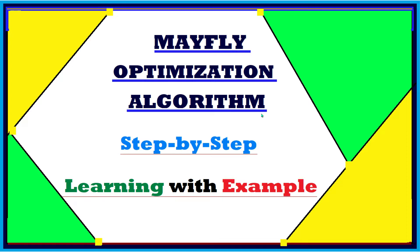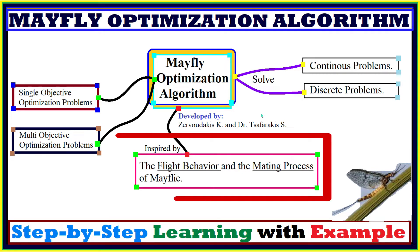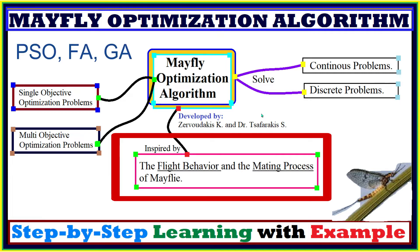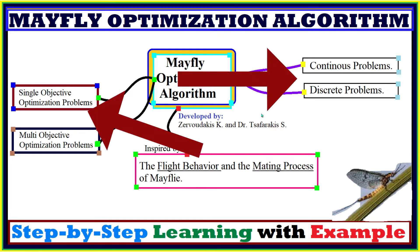Mayfly Optimization Algorithm is inspired by the flight behavior and the mating process of Mayflies in real life. This algorithm is a modification of the Particle Swarm Optimization algorithm. It also combines the advantages of evolutionary algorithms and swarm intelligence algorithms, forming a powerful hybrid algorithmic structure. We can use this algorithm to solve both continuous and discrete problems, as well as single objective and multi-objective optimization problems.